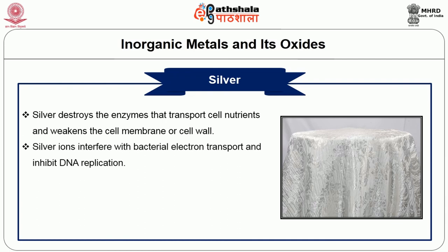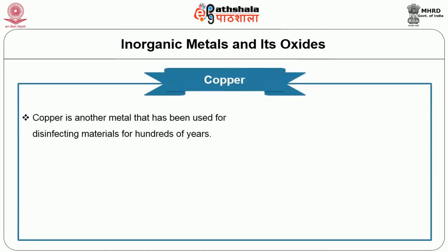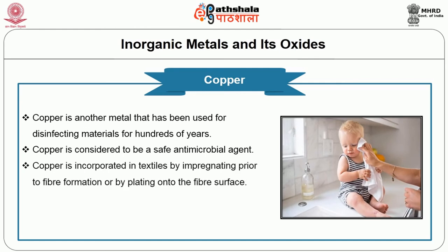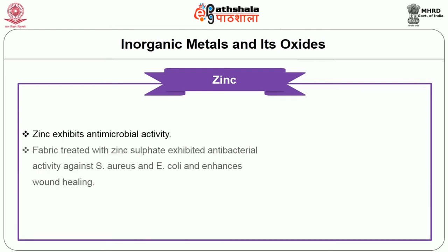Silver ions interfere with bacterial electron transport and inhibit DNA replication. Nanosilver has gained attention in its application to textiles. The nanosilver particles are effective because of the large surface area to mass ratio and modified surface charge. Copper is another metal that has been used for disinfecting materials for hundreds of years and is considered a safe antimicrobial agent. Copper is incorporated in textiles by impregnating prior to fiber formation or by plating onto the fiber surface. Copper is not as widely used as silver because its efficiency is less than silver. Zinc also exhibits antimicrobial activity. Fabric treated with zinc sulfate exhibited antibacterial activity against Staphylococcus aureus and E. coli and enhances wound healing. Zinc nanoparticles also act as effective antimicrobials.